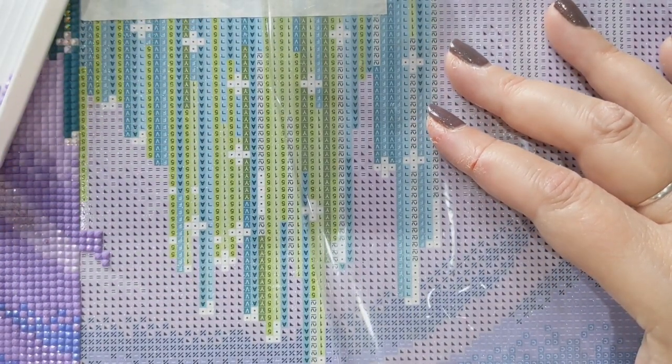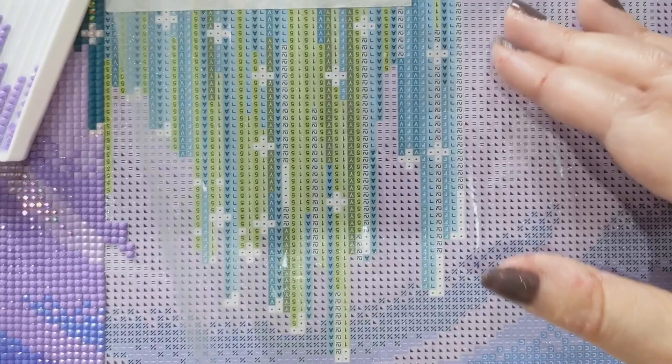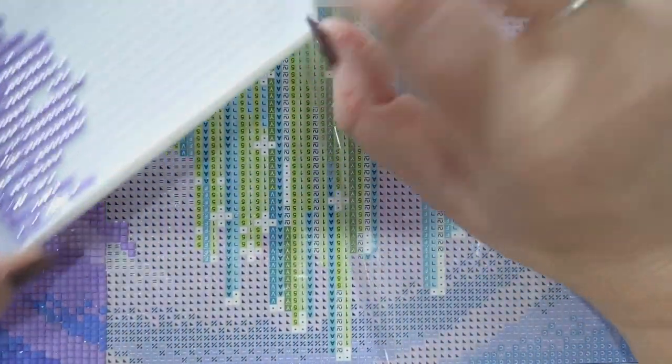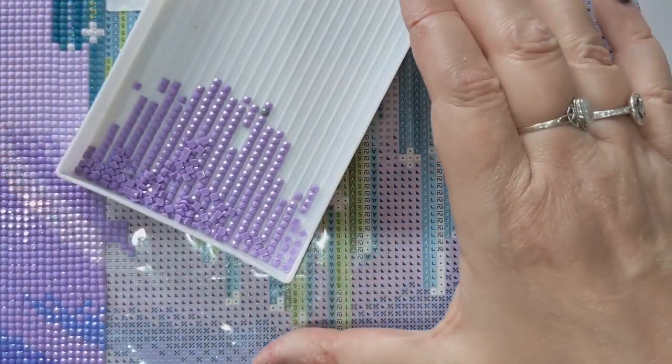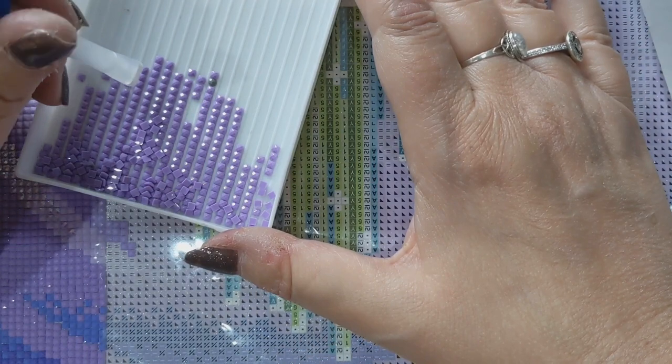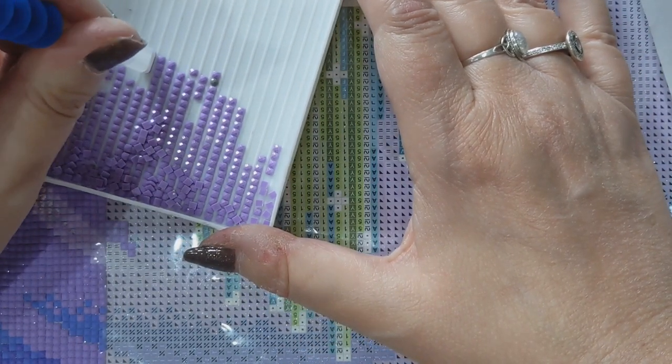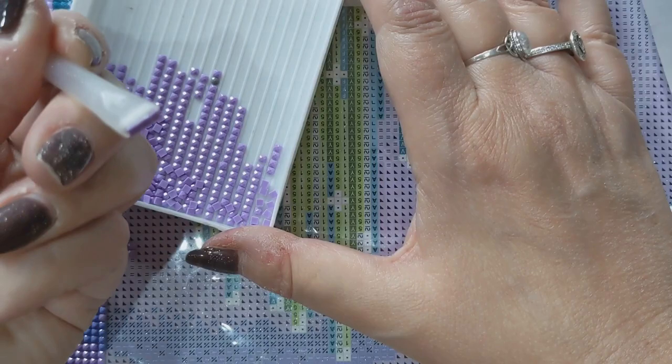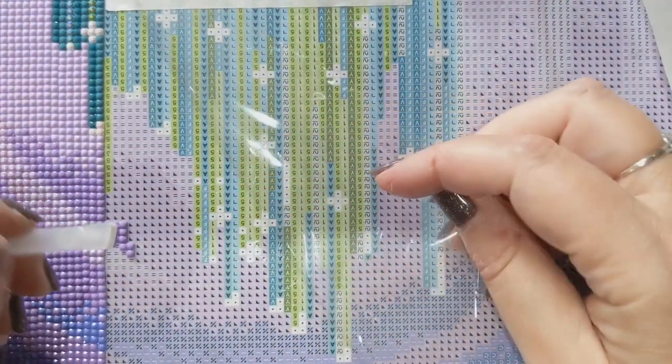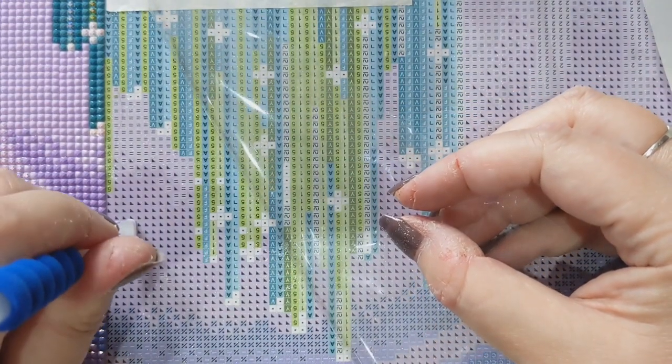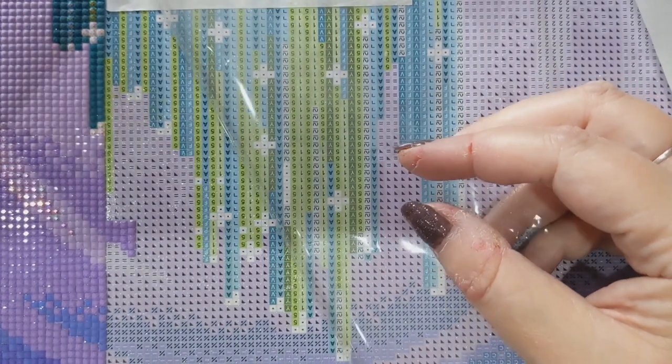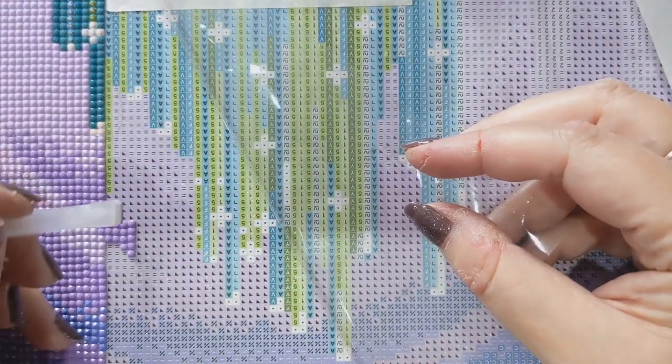So let's have a look. I'm going to put the pen into the drills so they're all lined up nicely ready for me. So you just press the wax onto the drills and there you have it. It's picked up the drills, it's picked up my row of drills for me. So you then just place them onto your canvas the same way as you do with the single placer. There we go, job done.